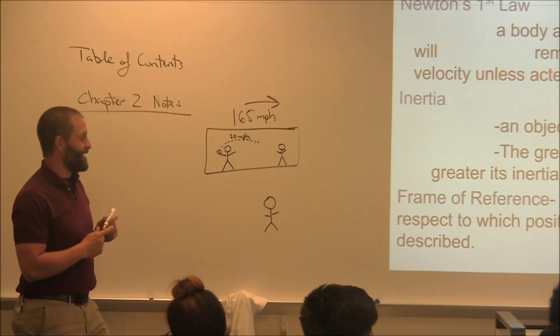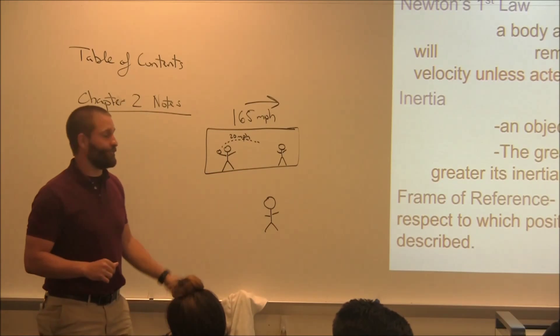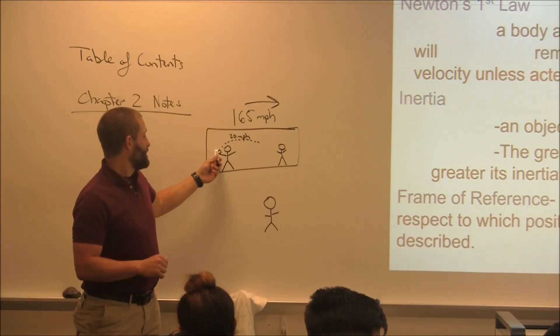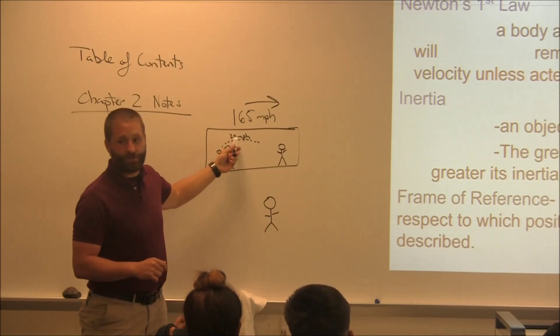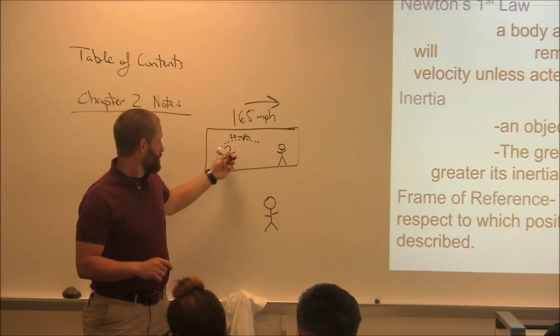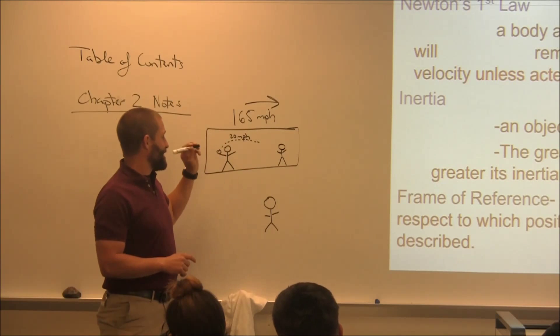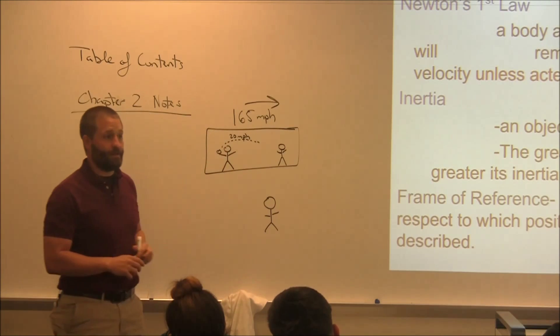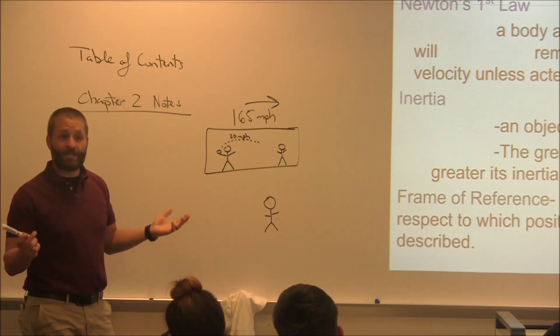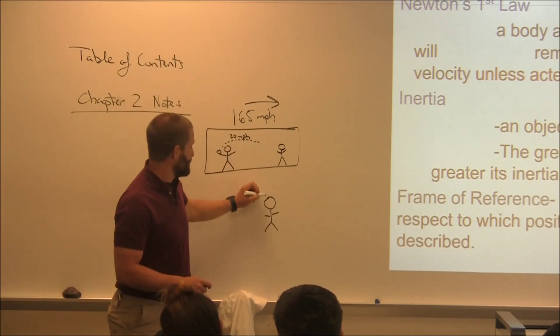All right, now these guys are playing catch back and forth. Now listen, when this guy throws the ball at 20 miles an hour, 20 miles an hour, how fast does it look like to the people on the train? 20 miles an hour. How fast does the ball look like it's going to this guy here?